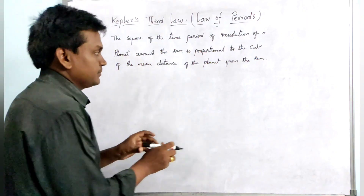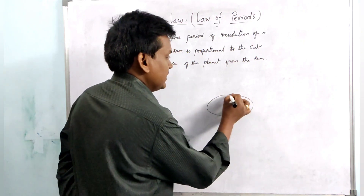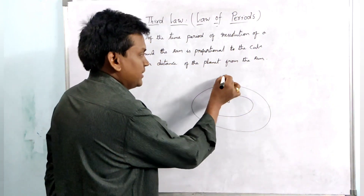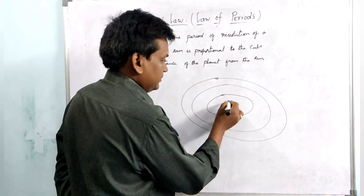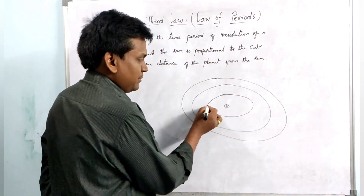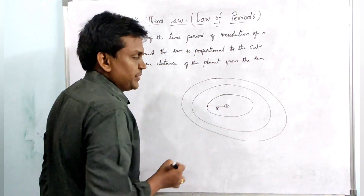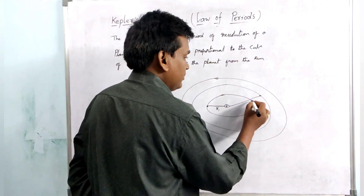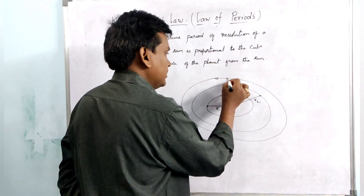This is the sun, and we know that all the planets revolve around the sun in elliptical orbits. This is one orbit, this is another orbit, and this is one more orbit. If you consider the distance between the sun and the planet, one planet is at a distance of R1, another planet is at a distance of R2, and another planet is at a distance of R3.